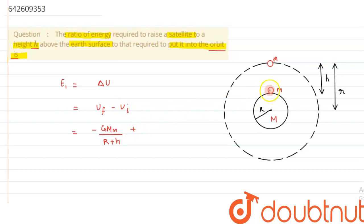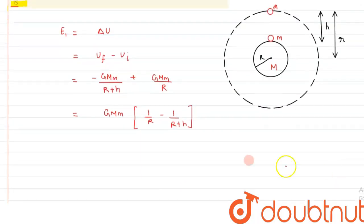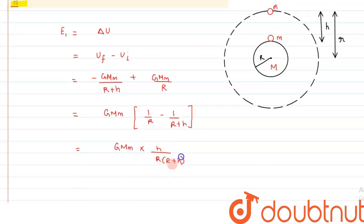The initial potential energy when the satellite is at the surface is −GMm/R. On simplification, we can take GMm as common, leaving us with 1/R minus 1/(R+h), which simplifies to GMm·h / [R·(R+h)].